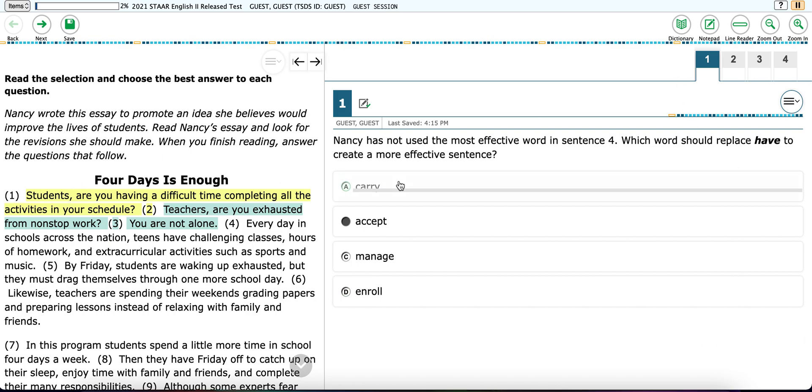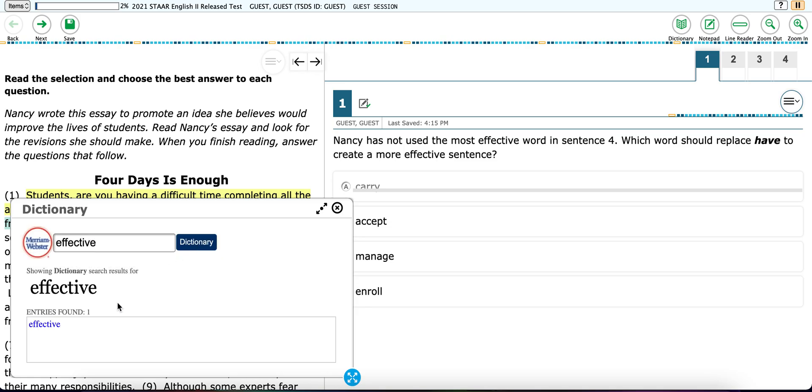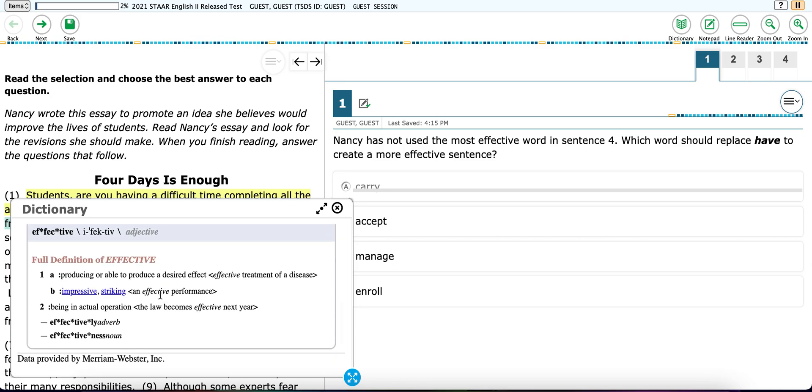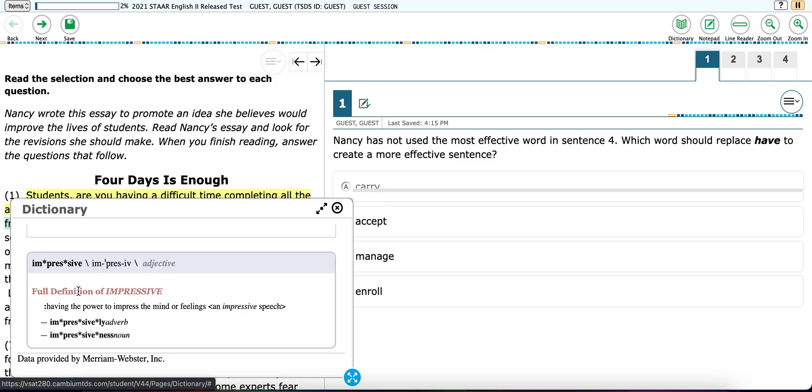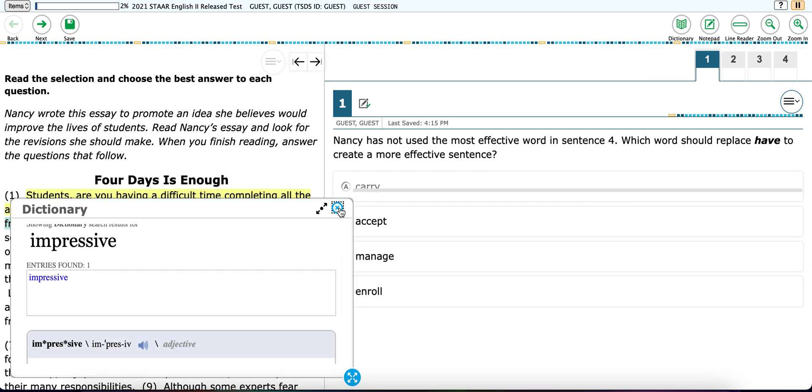So now we've gone through the text section and the question section. Let's go ahead and review the toolbar. You have your dictionary. You can click your dictionary. And let's say I want to look up the word effective. So I would type in effective and dictionary. It'll show me that there is one entry found. And if I scroll down, it will give me the definition for that term. Anything that's in blue you can click and it will also give you the definition of that as well. When you're done using the dictionary, you can go ahead and exit out of it.